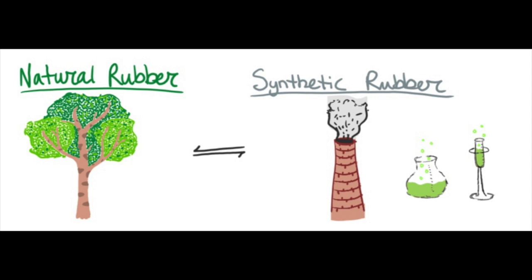So is rubber natural or synthetic? Both. Natural rubber is made from naturally occurring latex and there are up to 200 plants in the world that can produce latex. Most natural rubber comes from a tree species called Hevea brasiliensis, more commonly known as the rubber tree. I just looked up that synthetic rubber is made in chemical plants using petrochemicals. Neoprene is made by the chemical reaction between acetylene and hydrochloric acid. There is also emulsion styrene butadiene, which is commonly used in tires.